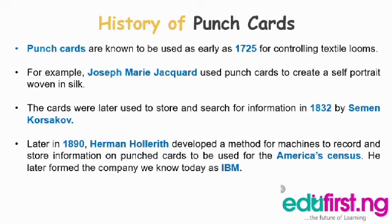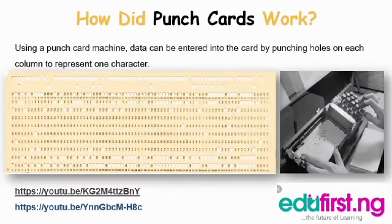How did punch cards work? As you can see on the screen, the picture on the left is a clear example of what a punch card looks like, and the picture on the right is an example of a woman using a punch card machine to create a punch card. Using a punch card machine like in the picture shown on the right, data can be entered into the card by punching holes on each column to represent one character.